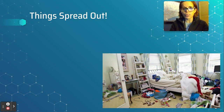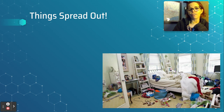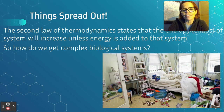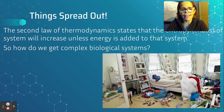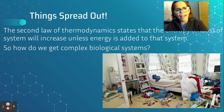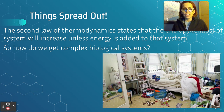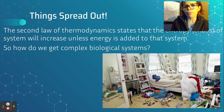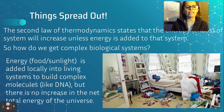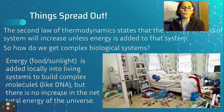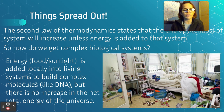As a general rule, things spread out. That's what the second law of thermodynamics says. The second law of thermodynamics states that the entropy — which at this point we're just going to call chaos — of a system will increase unless energy is added to that system. So how is it that we get complex biological systems, like a molecule as complicated as DNA, if in general the universe is running out of energy? The only way to get something as complicated as a biological system is to add energy through food or through sunlight. Locally we're adding energy to build more complex molecules like DNA, but there's no increase in the net total energy of the universe.